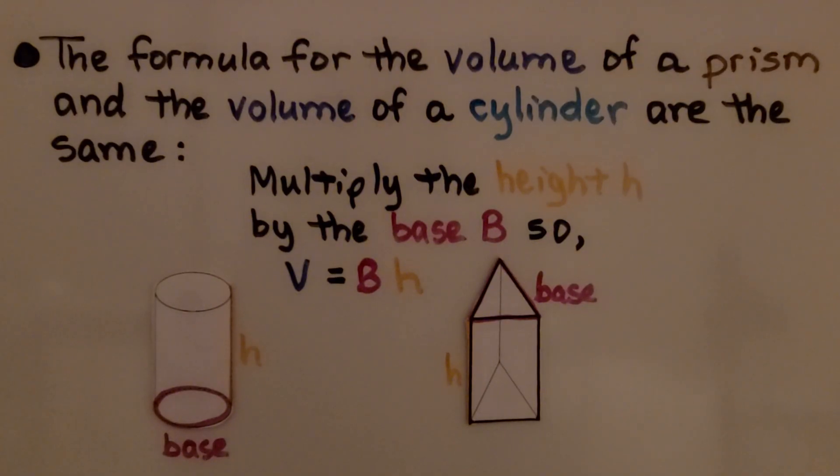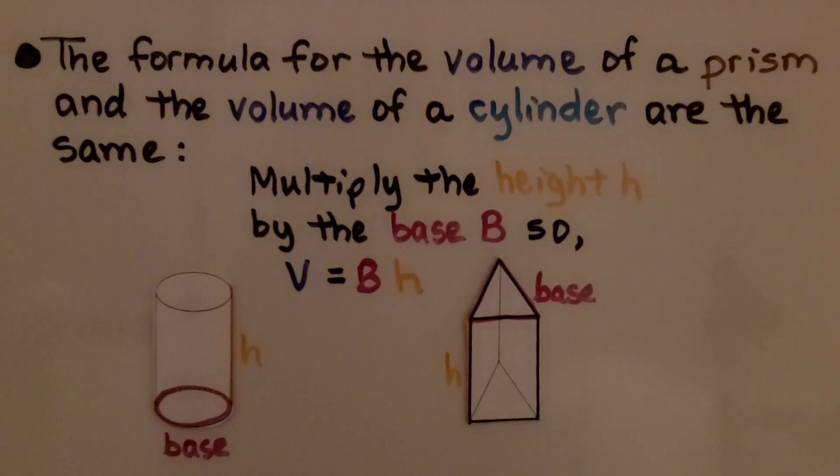So for a little comparison, the formula for the volume of a prism and the volume of a cylinder are the same. We multiply the height h by the base b, so volume is equal to base times height. Remember there's two bases. We have base one and base two. We can use either one for the base area.